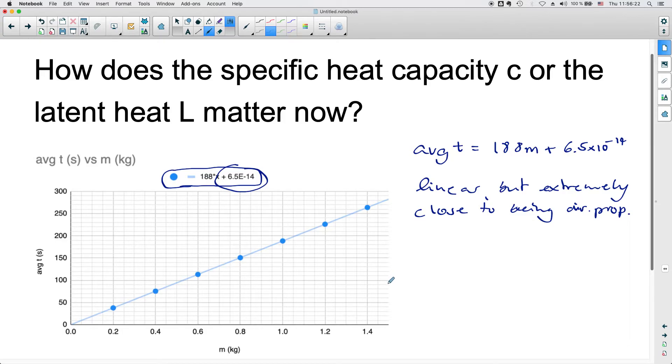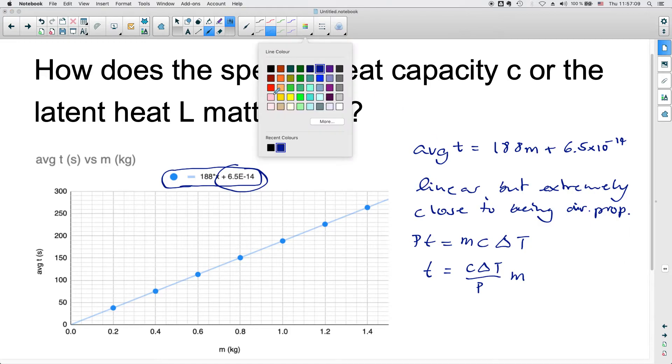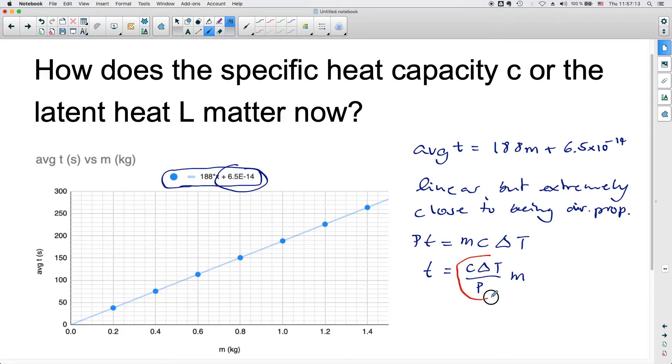Let's have a look again at the equation that we used at the time. If you don't remember that, then just go back to the last video that I shared with you. So the equation would have been the time. This came from power times time. This is the thermal energy that goes into heating the water, and that would be equal to mc delta t. So therefore, your time would be equal to c delta t over p times m. I'm writing m at the very end because that's my x value. So that means that this part here is actually my gradient. That is my gradient or the steepness of the line.